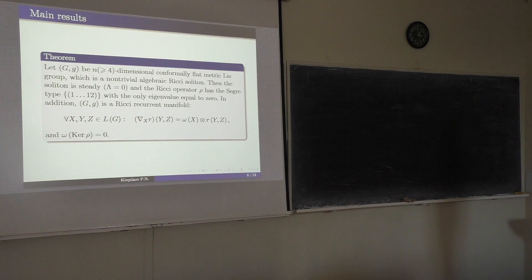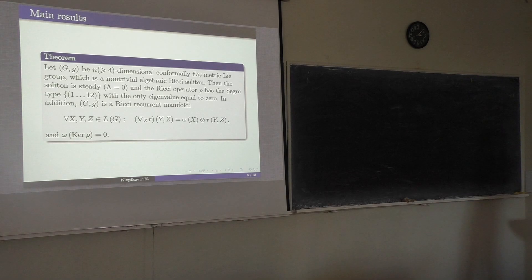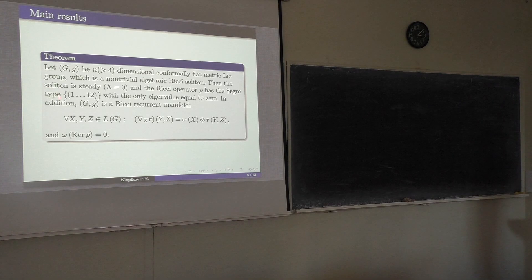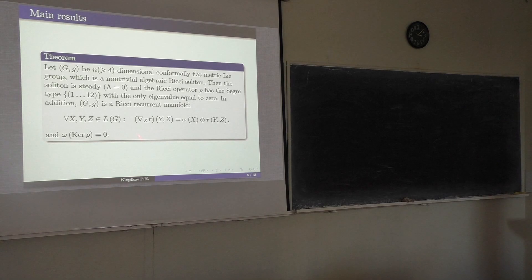Main result: Let G be an n-dimensional conformally flat metric Lie group which is a non-trivial algebraic Ricci soliton. Then the soliton is steady, meaning the constant lambda in the algebraic Ricci soliton equation must be equal to zero. The Ricci operator has spectral type (1,1,...,2) with only eigenvalue equal to zero — meaning in the Jordan form, we have 1×1 blocks on the main diagonal and one final 2×2 block, all with eigenvalue zero. In addition, G is a Ricci recurrent manifold, meaning the covariant derivative of the Ricci tensor can be expressed through the Ricci tensor and a one-form omega, and omega vanishes on any vector in the kernel of rho.